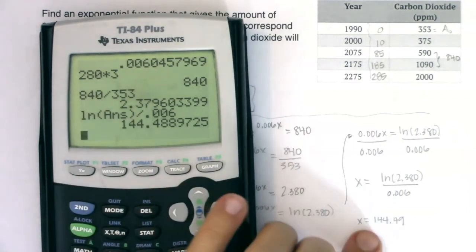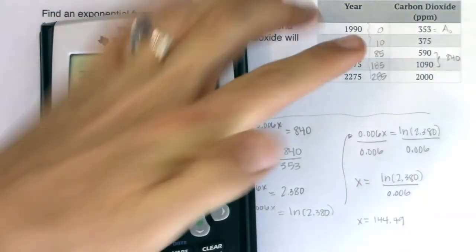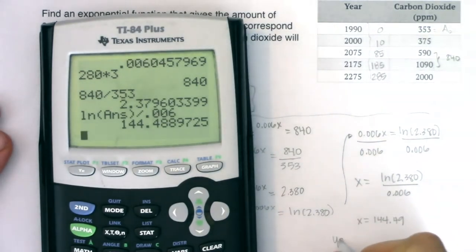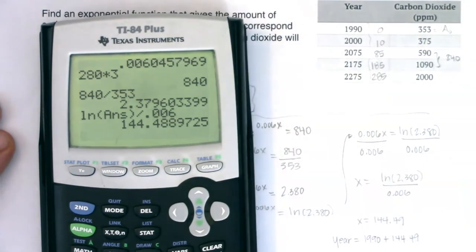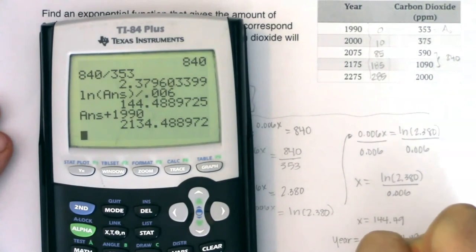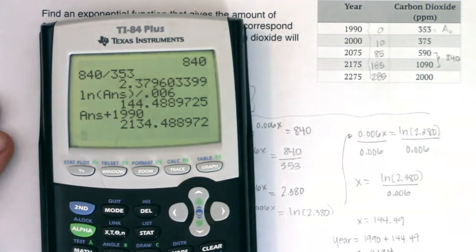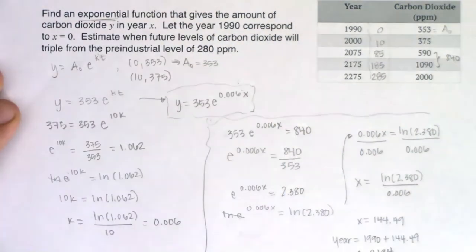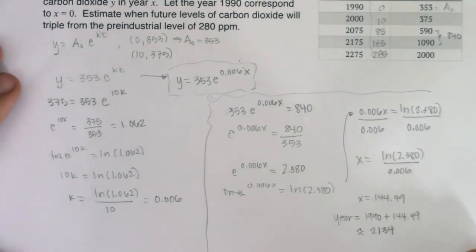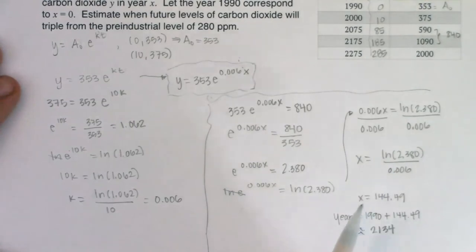Let's go find out what that is. I need to do the natural log of this number divided by 0.006. And we're getting about 144.49. Now this doesn't represent the year 144, and that wouldn't make sense because we didn't have that much CO₂ in the year 144. Don't forget that your base year was 1990. So the year in question is your base year plus the number of years that have passed. So let me add 1990 to this. So we think the year is around 2134.